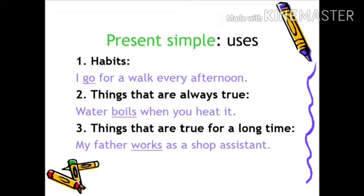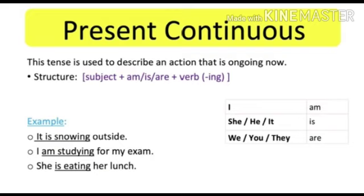Simple present tense usage: it is used to describe a habitual action, for example, I go for a walk every afternoon. Second, things that are always true, for example, water boils when you heat it. Third, things that are true for a long time, for example, my father works as a shop assistant.